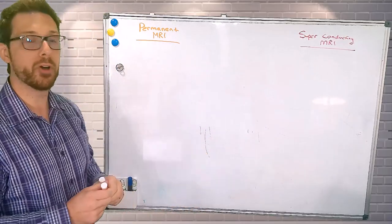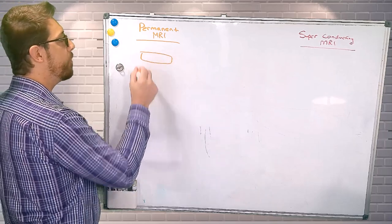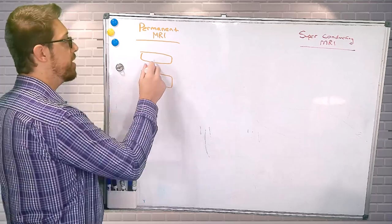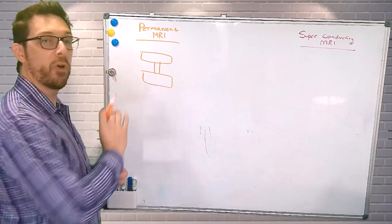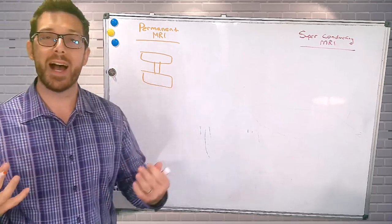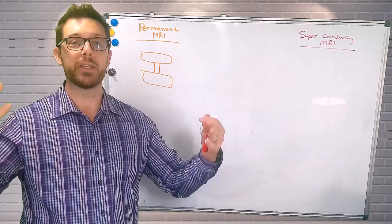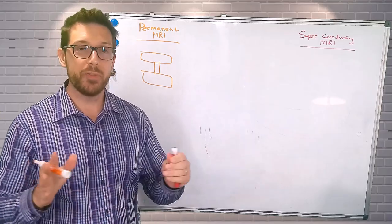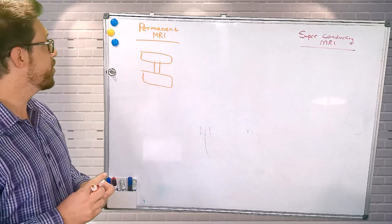We can imagine that a permanent MR unit essentially has a magnet on top of the patient and below the patient. Sometimes it's in a C formation, but these MRI units typically don't achieve high field strengths. We don't really see these go beyond 0.6 Tesla, and even that is pushing it. Typically we find these at very low or ultra-low MRI field strengths.